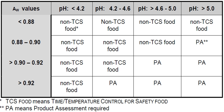In Australia, Food Standards Australia New Zealand defines potentially hazardous food to mean food that has to be kept at certain temperatures to minimize the growth of any pathogenic microorganisms that may be present in the food or to prevent the formation of toxins in the food. Under Australian regulations, the following are examples of potentially hazardous foods.